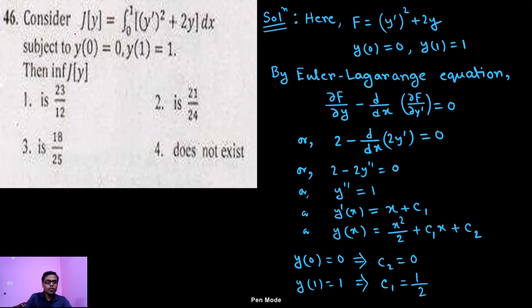The question is: consider j[y] equals to integration 0 to 1 of (y')² plus 2y dx, subject to y(0) equals to 0 and y(1) equals to 1.